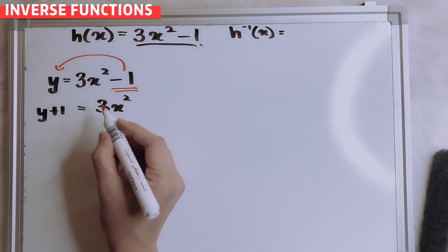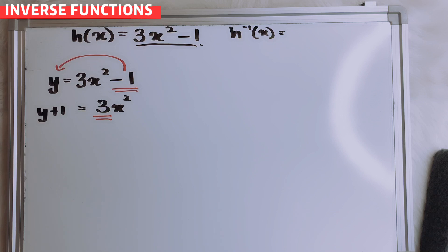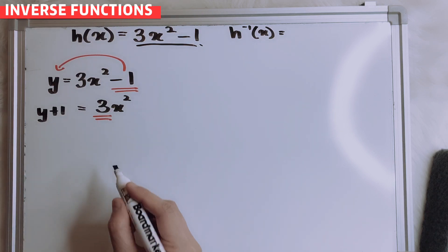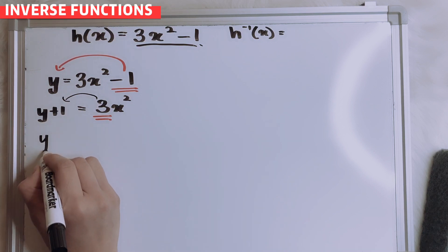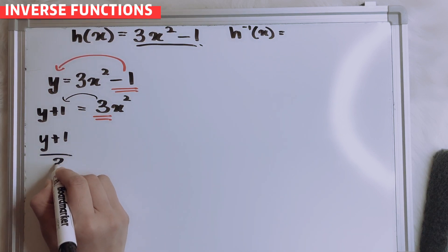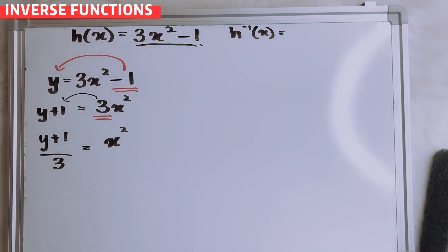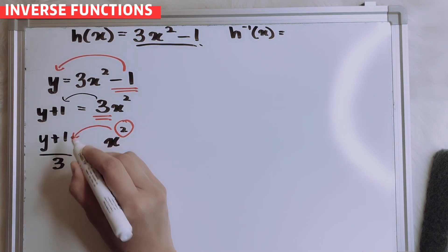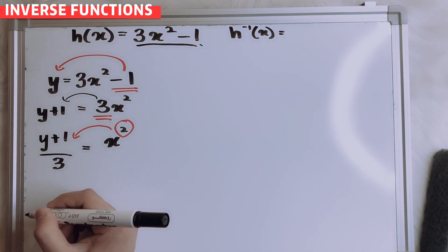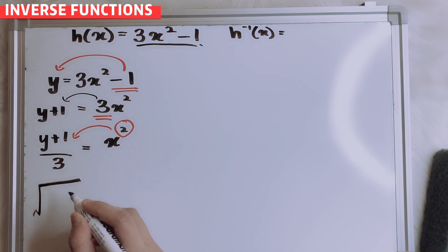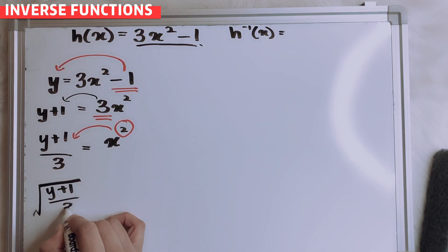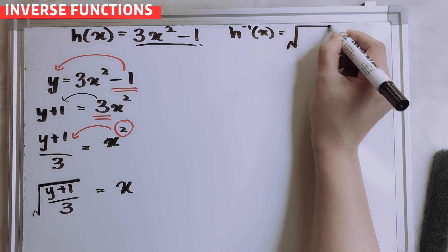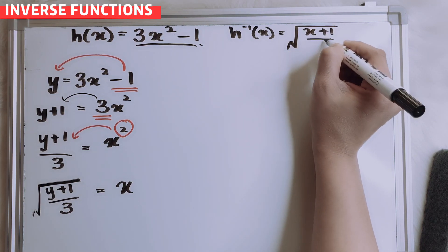So next, I want to remove this number 3. There is no operation in between 3 and x squared, so that means this is multiplied. So I want to transfer to this side, so it will be y plus 1 divided by 3 equals to x squared. Now I want to remove the square — opposite of square is square root. So y plus 1 over 3 equals to x. So h inverse x is the square root of x plus 1 over 3.